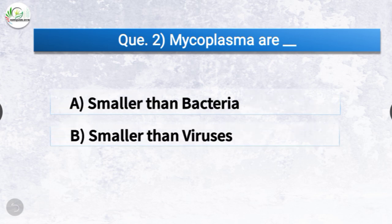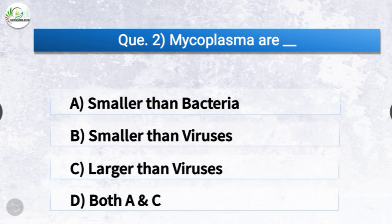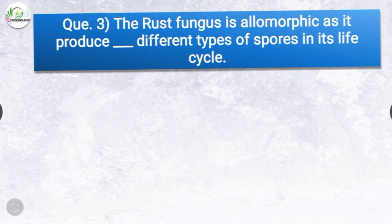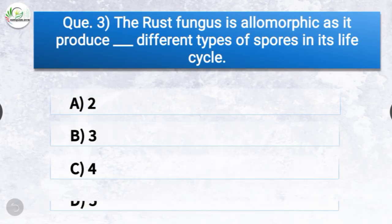EJ Butler is considered as father of plant pathology in India. Question number two: Mycoplasma are dash. The options are smaller than bacteria, smaller than viruses, larger than viruses, or both A and C. The correct answer is option D, both A and C — smaller than bacteria and larger than viruses. So mycoplasma are smaller than bacteria and larger than viruses.